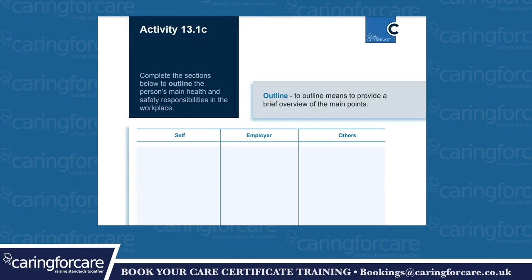Activity 13.1c: complete the sections below to outline the person's main health and safety responsibilities in the workplace. To outline means to provide a brief overview of the main points. The sections cover: self, employer, others.